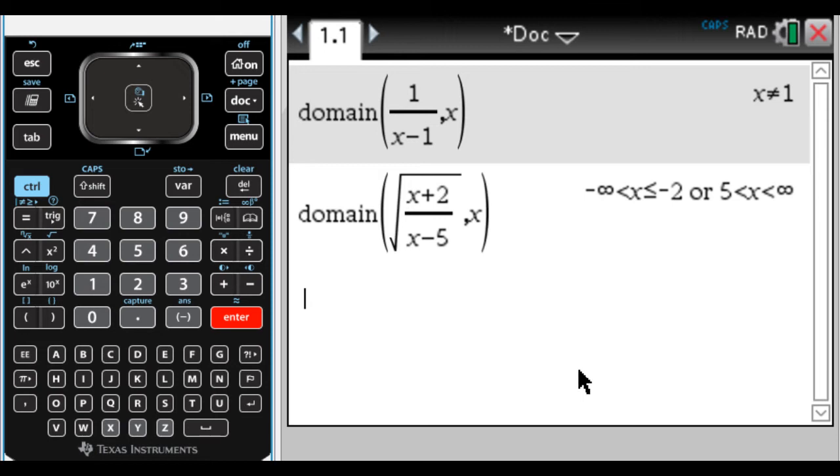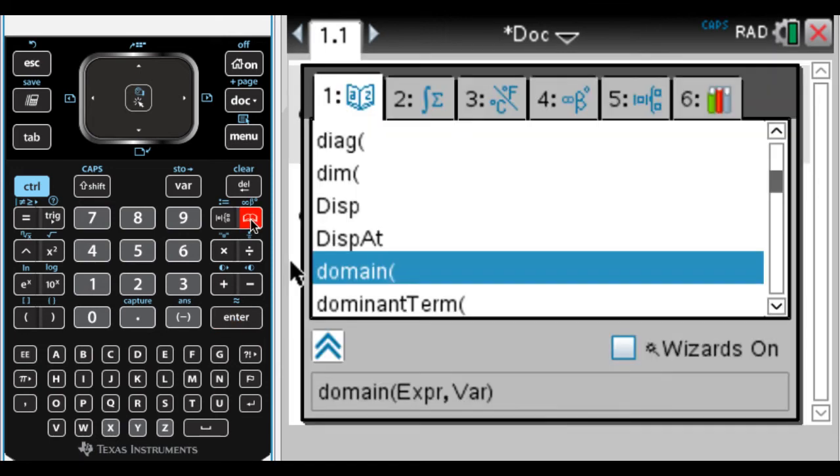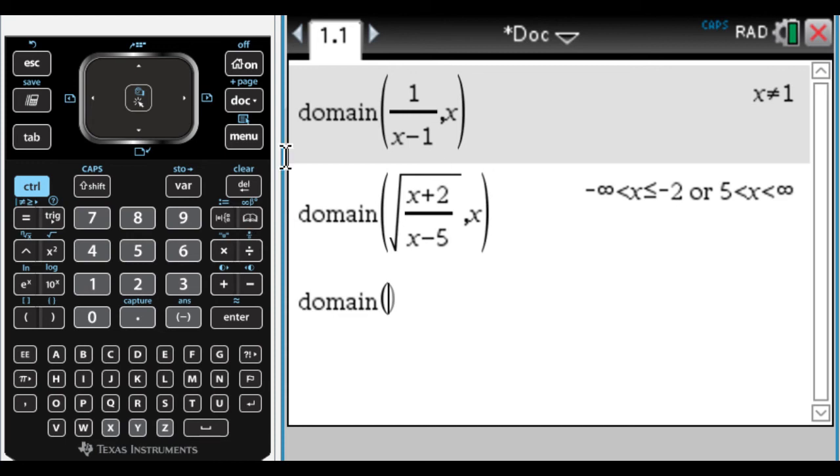It can also find the domain of trig functions, which maybe you haven't gotten to yet. But if you have, this is a really nice feature. One feature of the catalog is it stays on the last thing you've used it for. So if you're doing a lot of things with domain, it's just going to be on domain when you get there.